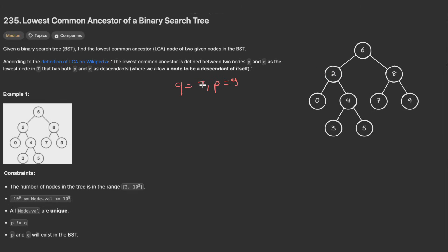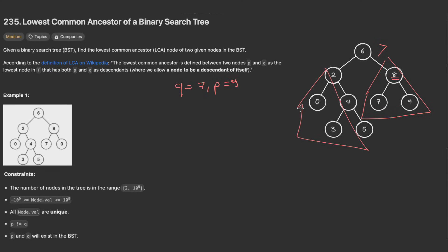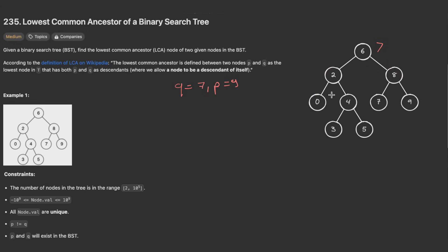Now let's take q equals seven and p equals nine. Both are greater than the root, so we search the right subtree. We check if both are greater than the current node — they are — so we return that node. The solution logic is: if both p and q are greater than the root, go right; if both are less, go left; otherwise, return the root itself.